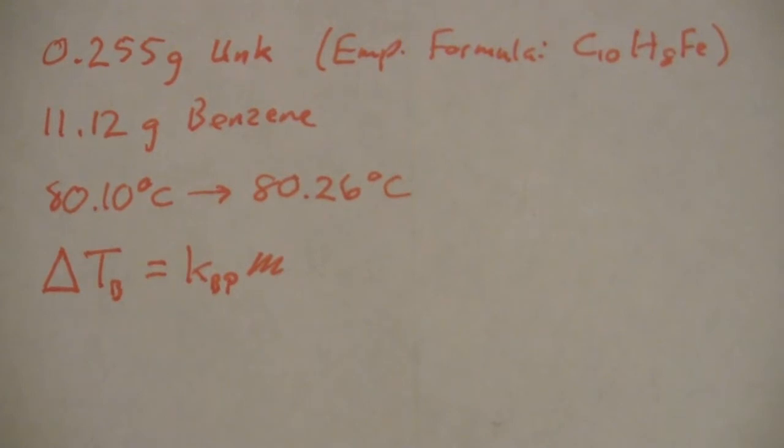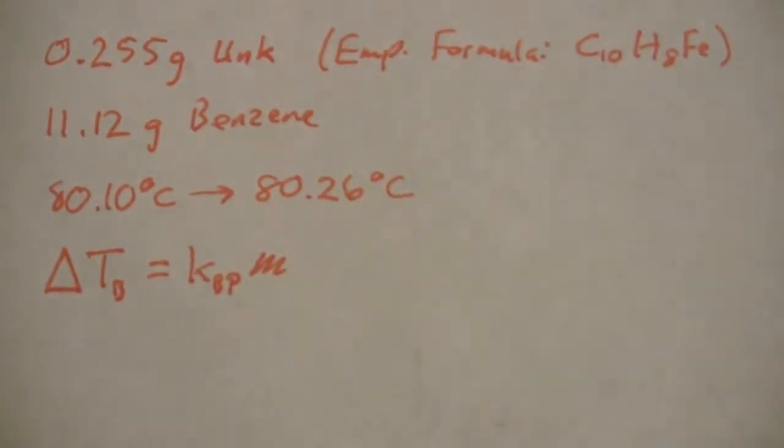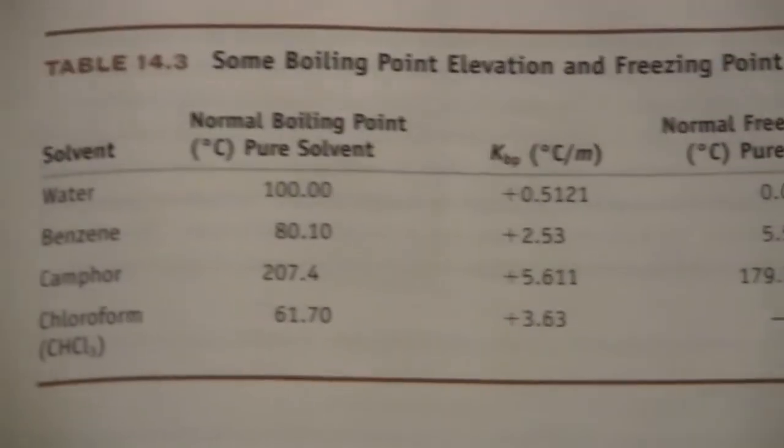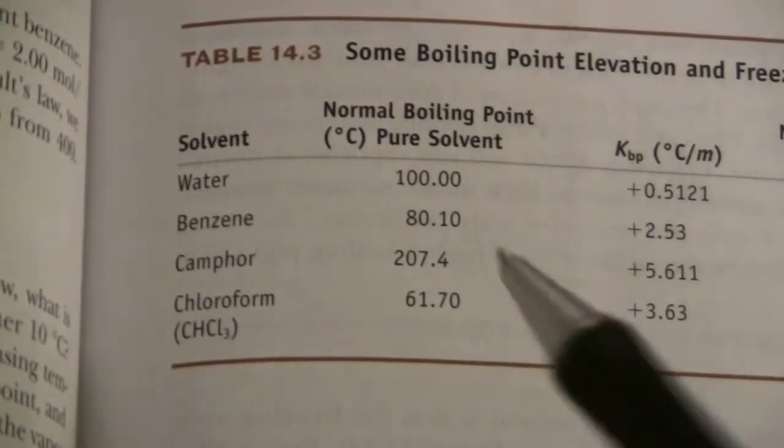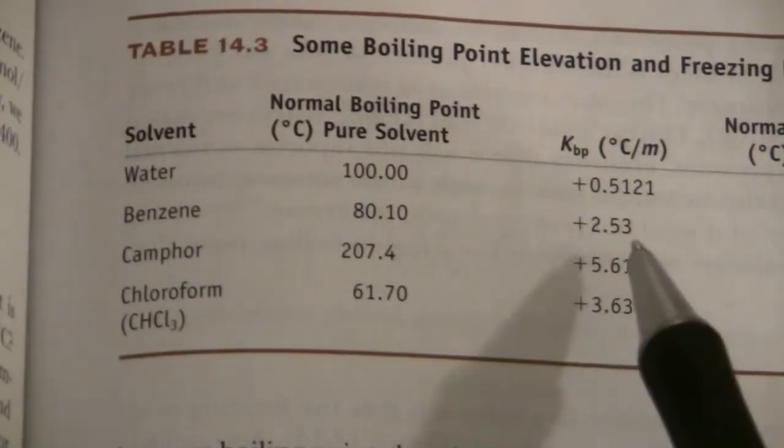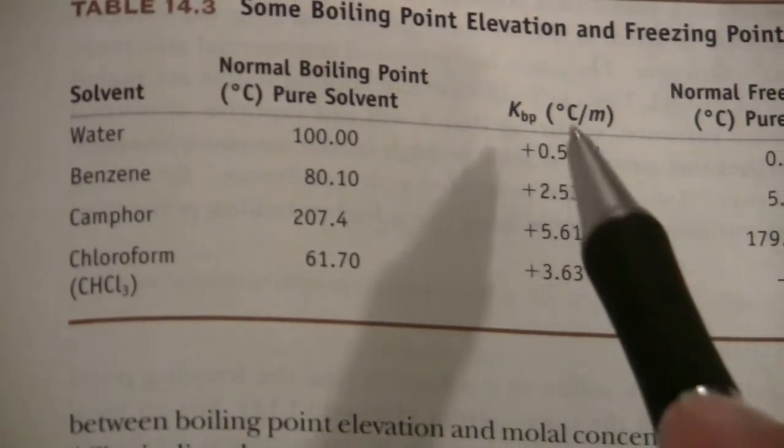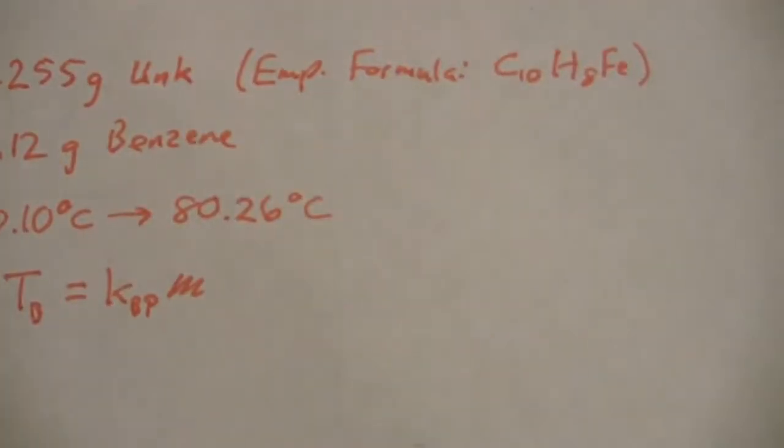Now the boiling point constant is unique for every solvent, so since our solvent is benzene we need to know the boiling point constant for benzene. There's a table in our book that has the boiling point constant for benzene: 2.53 degrees C per molal, positive sign because it is increasing.